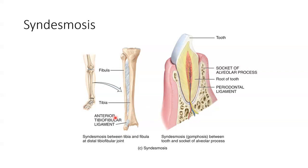Another example is called a gomphus, which is the joint between a tooth and the respective jawbone. In healthy teeth, this joint permits no movement.